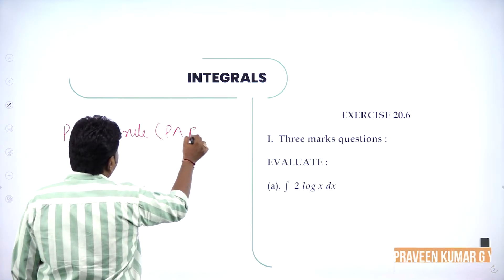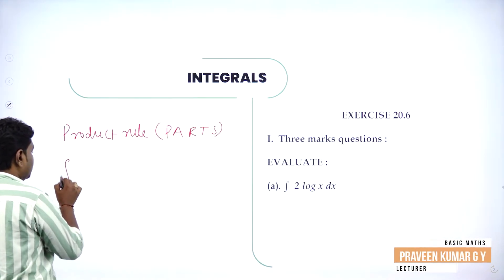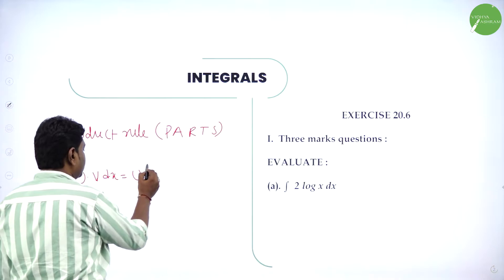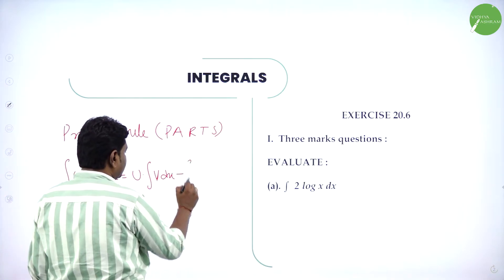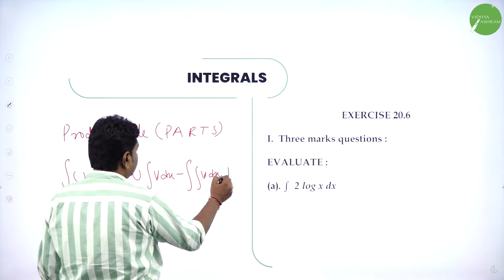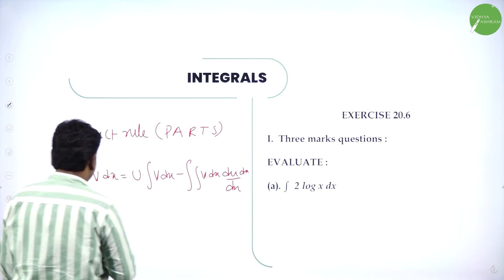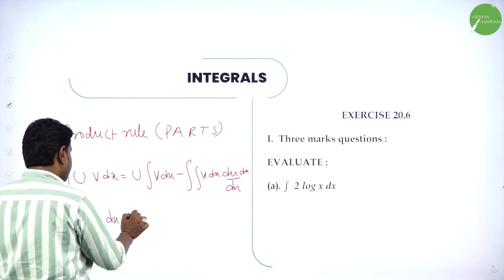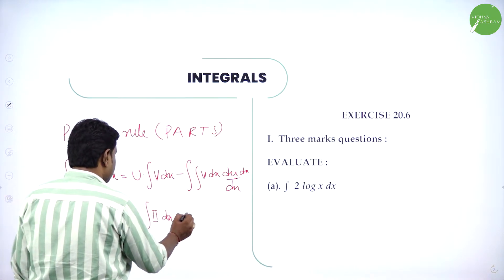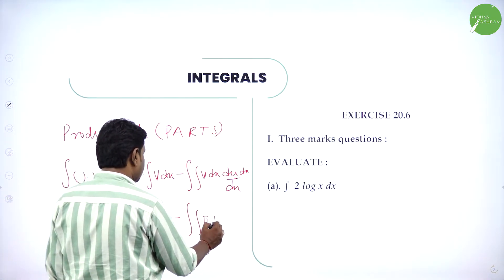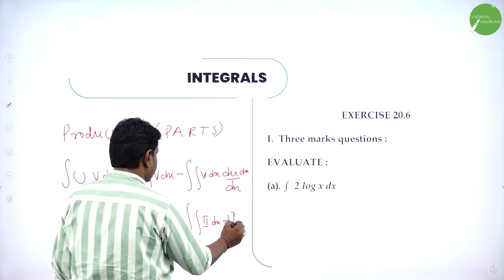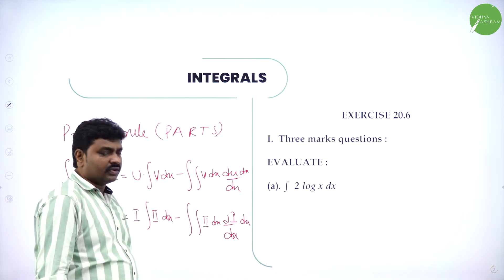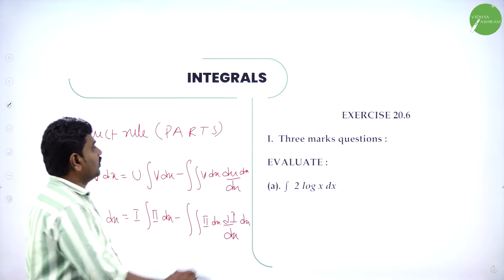When you have product rule or parts, integration of u into v is: first function into integration of second function, minus integration of the integration of second function into derivative of first. So: first into integral of second, minus integral of integral of second into derivative of first.